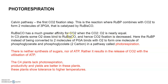RuBisCO has a much greater affinity for carbon dioxide when carbon dioxide and oxygen concentrations are nearly equal, but in C3 plants some oxygen does bind to RuBisCO, decreasing carbon dioxide fixation. Ribulose bisphosphate, instead of being converted to PGA, binds to the oxygen molecule to form phosphoglycolate — this is called photorespiration. There is neither synthesis of sugars nor of ATP; it results in the release of carbon dioxide with the utilization of ATP. C4 plants lack photorespiration, which is why their productivity and yields are better, and these plants show tolerance to higher temperatures. This pathway involves chloroplasts, peroxisomes, and mitochondria, but photorespiration does not occur in C4 plants.